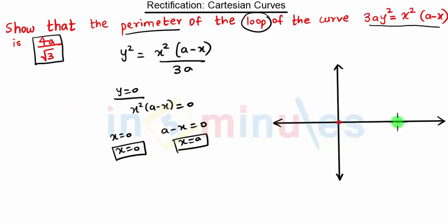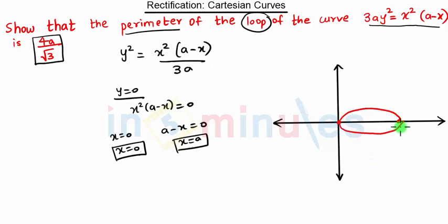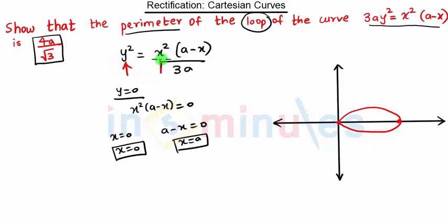Whenever we have two points on the same axis, the loop is on that axis. So we have one loop between x = 0 and x = a. You can remember: whenever we have y² and x² multiplied by something, this curve will always have one loop.